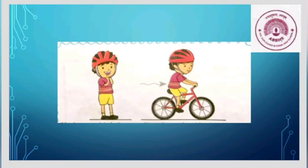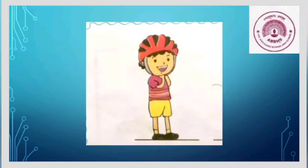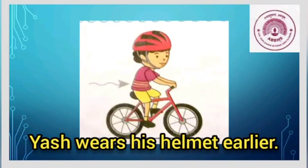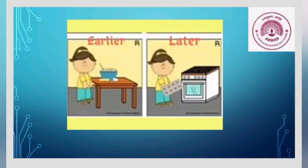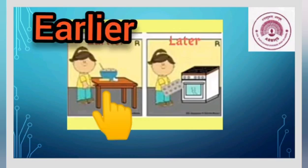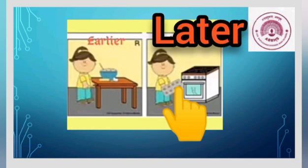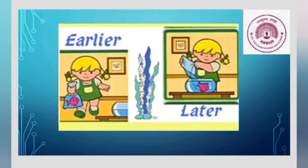In the next picture we can see Yash wants to ride his bicycle. Which activity was performed earlier and which was performed later? What will be your answer? Right — Yash wears his helmet earlier and later he rides his bicycle. So let's see the next picture. Here we can see the girl making the batter of a cake earlier and later baking it in the oven, and it is ready to eat. Now in this picture, earlier the girl brought a fish for the fish tank, and later she put the fish in the fish tank.